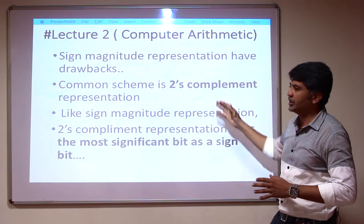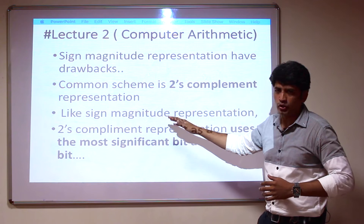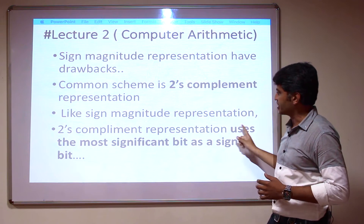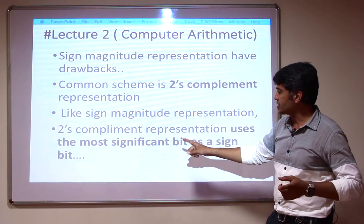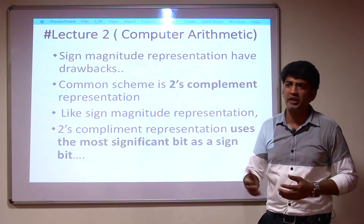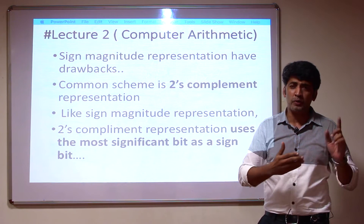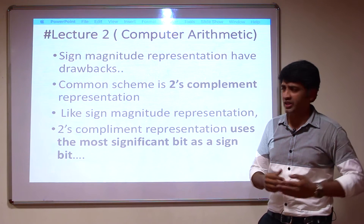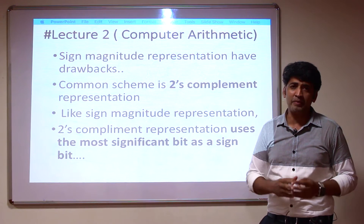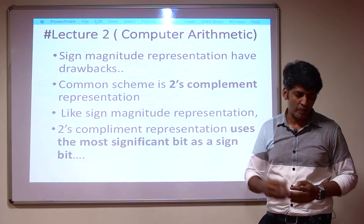Here, like sign magnitude representation, the 2's complement representation also uses the most significant bit as the sign bit. For example, in a 4-bit representation such as 1000, the leftmost 1 is the most significant bit representing the sign bit. If it is 1, that represents minus; if it is 0, that represents plus.